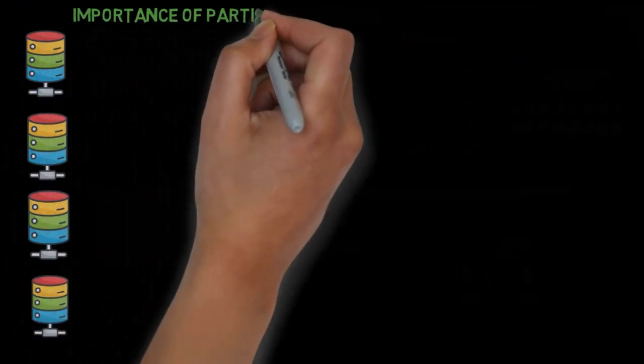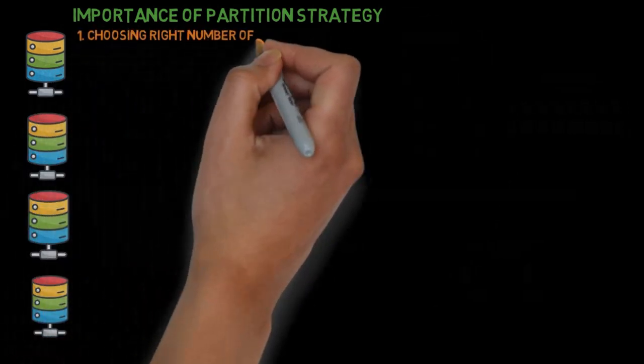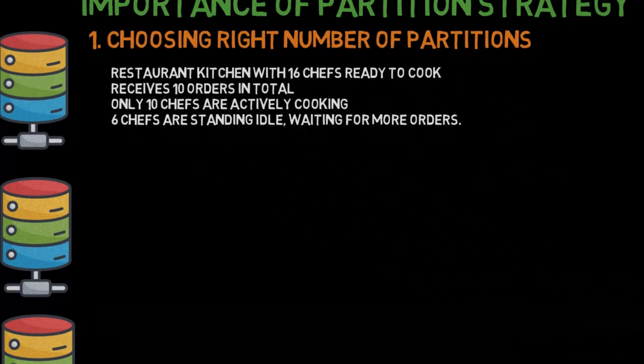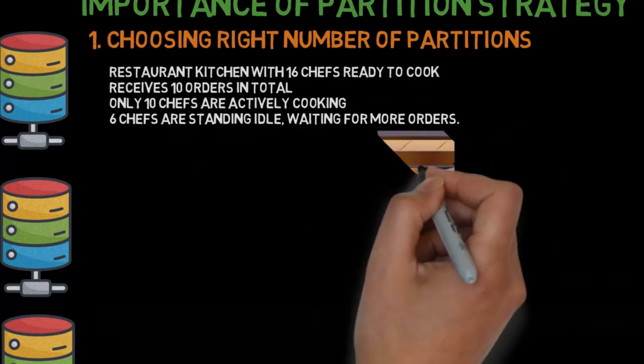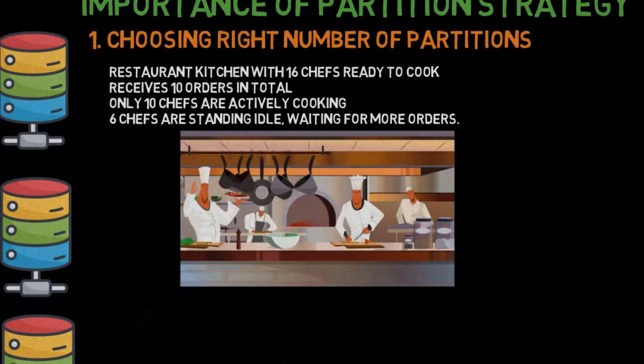Let's explore the importance of partition strategy with examples. Choosing right number of partitions. Imagine a busy restaurant kitchen with 16 chefs ready to cook. The restaurant receives 10 orders in total.